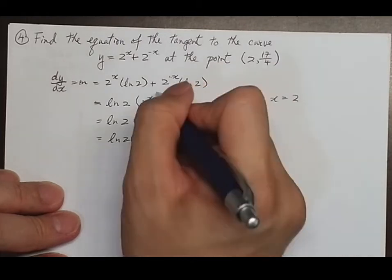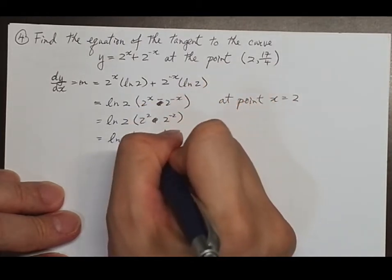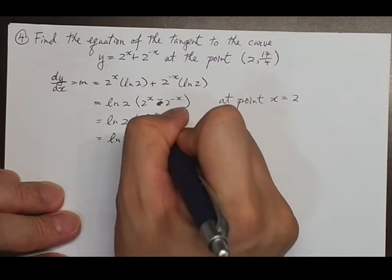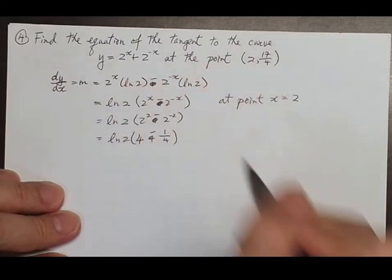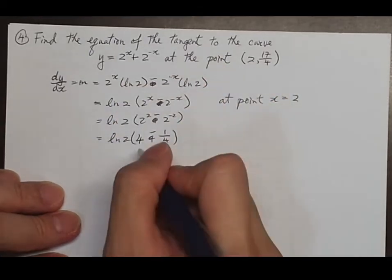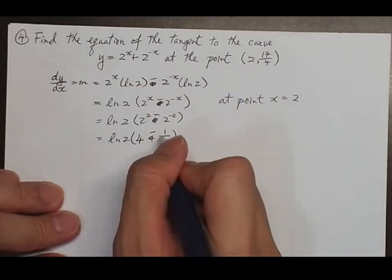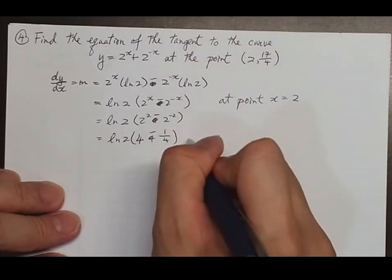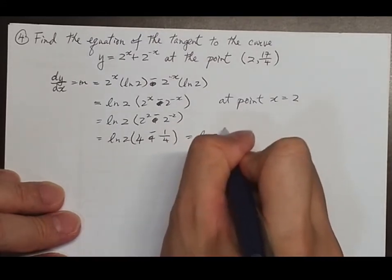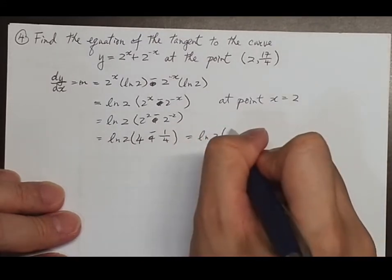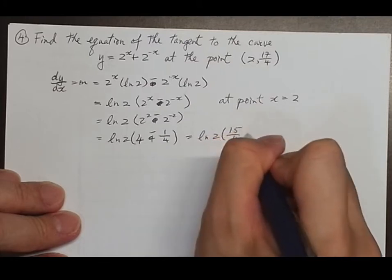Wait — the sign should be minus for the second term. So it's 4 minus 1/4, giving log 2 · (15/4). This is the slope of the curve at this point.